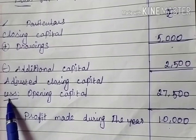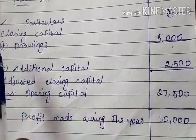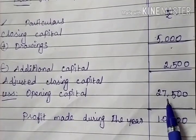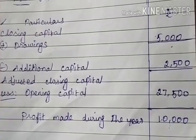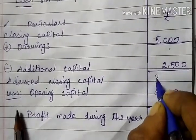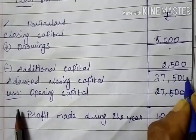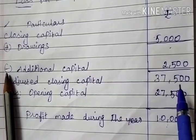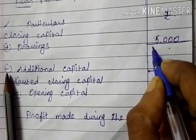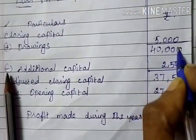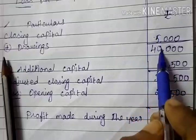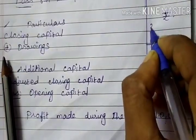I will reverse the calculation. Adding: profit 10,000 plus opening capital 27,500 equals 37,500. Then 37,500 plus additional capital 2,500 equals 40,000. For drawings, we do the opposite — minus. So 40,000 minus drawings 5,000 equals 35,000. Therefore, closing capital is 35,000.